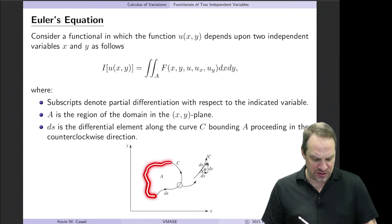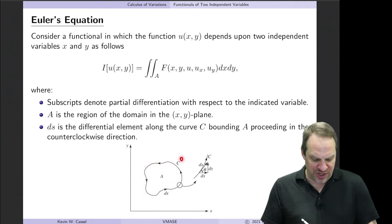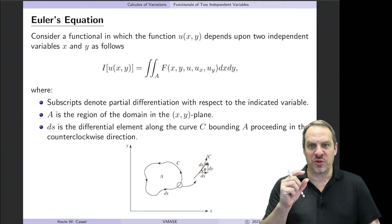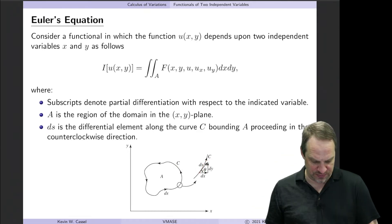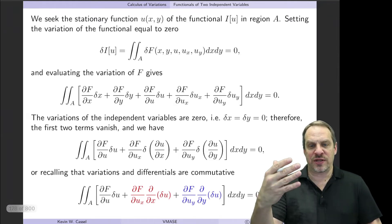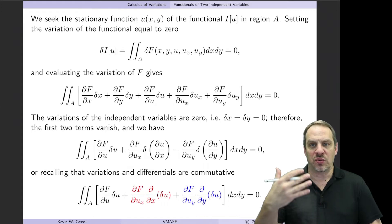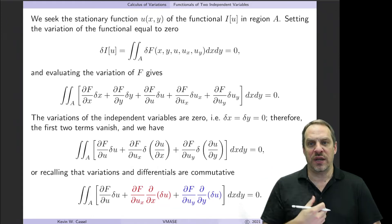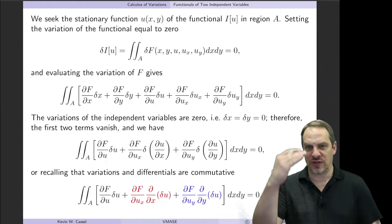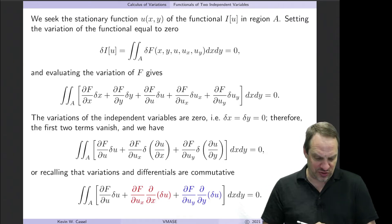A is the domain in the two-dimensional x-y plane, bounded by the curve c, and ds is a differential element along c. We'll go through exactly the same steps as before: take the variation of i, set it equal to zero, do the integration by parts, and get the natural boundary condition — same steps as before, just now for the two-dimensional scenario.